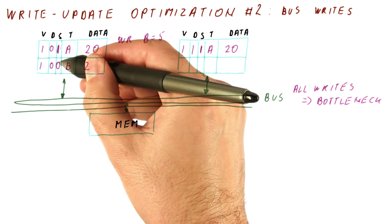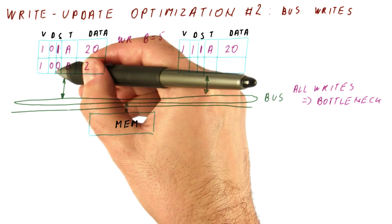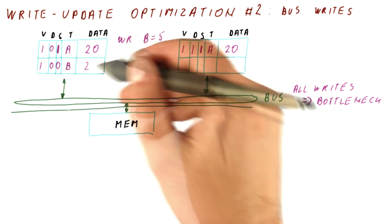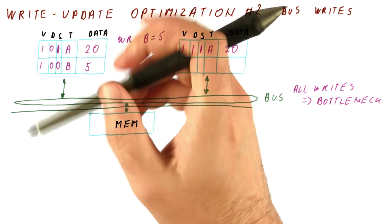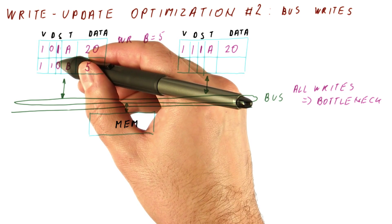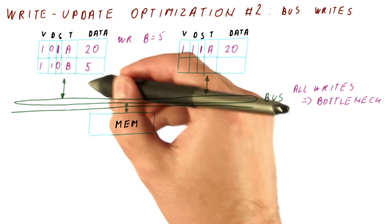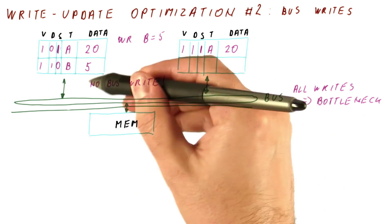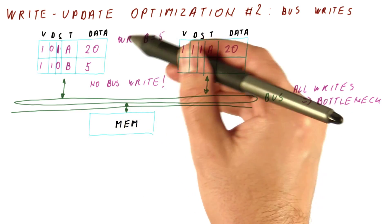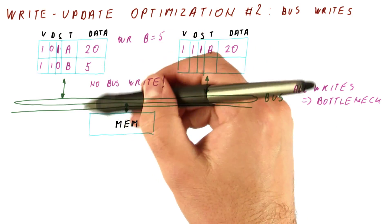it checks the shared bit here. And because we know that nobody else has this block, we can write the value here. Make the thing dirty because the memory is no longer up to date. But because the shared bit stays at 0, meaning we are the only one who has it, we don't do a bus write here. So as long as some block is being accessed only by one core, it's no longer going to broadcast all of the writes.